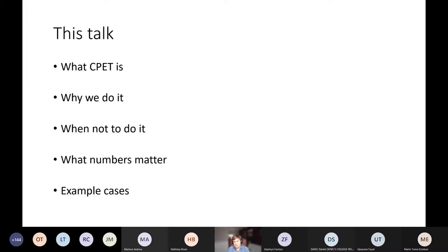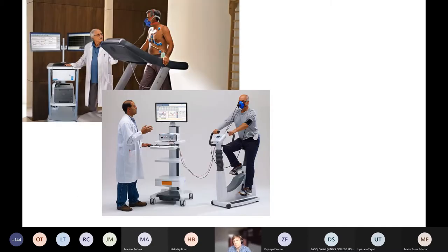Today we're going to talk about what a CPET is, why we do it, when we shouldn't do it, which numbers in the report matter, and then hopefully have enough time to go through some example cases. So a CPET should look a bit like this, either on a treadmill or a bike. Anesthetists tend to like bikes, but cardiologists would tend to be used to the Bruce protocol and things like that, so we often use treadmills. But they give you the same numbers.